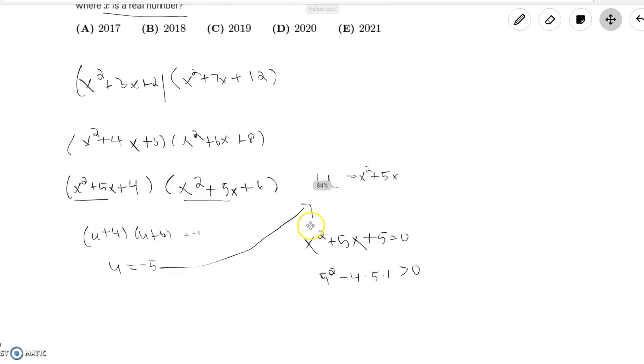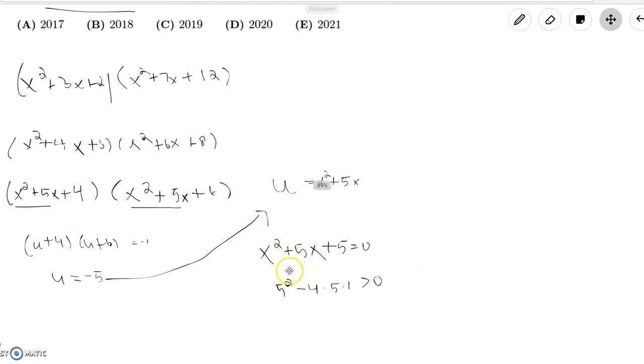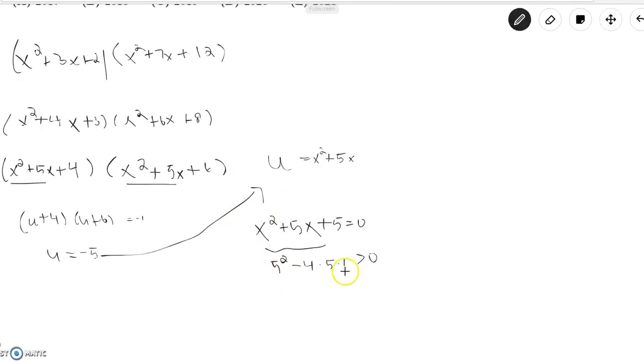Now that we're given that x²+5x equals u, which equals negative 5, we can just substitute that in. Thus our (x²+5x+4)(x²+5x+6) becomes (-5+4)(-5+6).